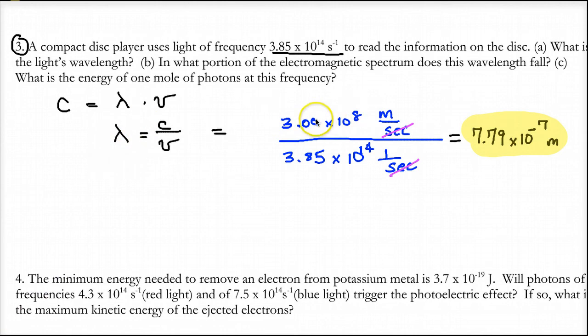So we plugged in for speed of light, which is given to you, meters per second, 3.0, that's a constant, divided by the frequency that was given to us here. And what you get is 7.79 times 10 negative 7 meters. And that's a small wavelength, that's a tiny, tiny wavelength.